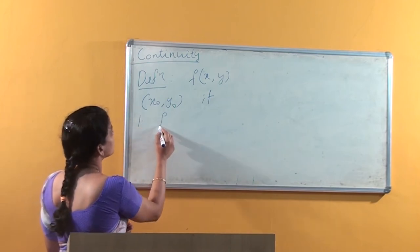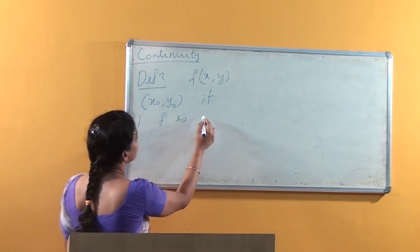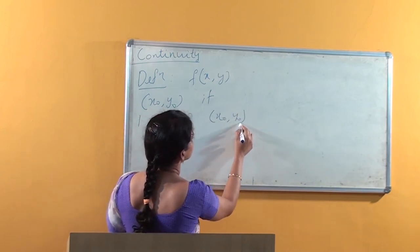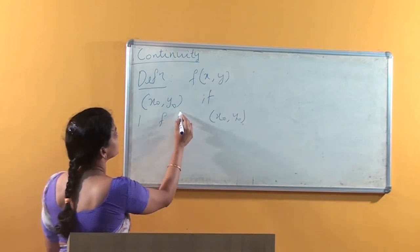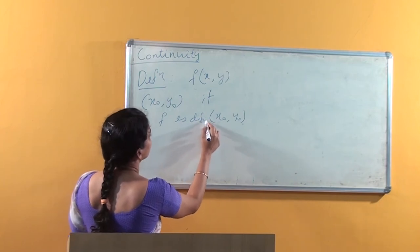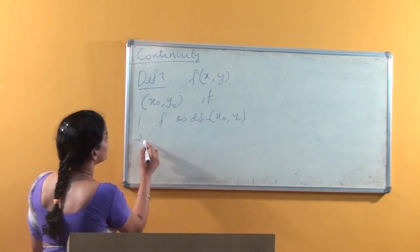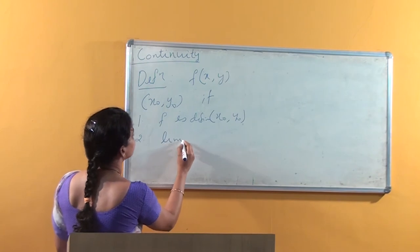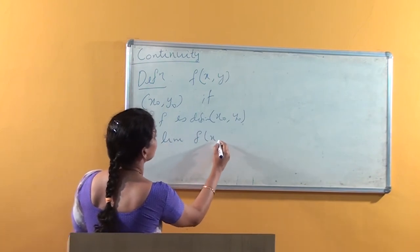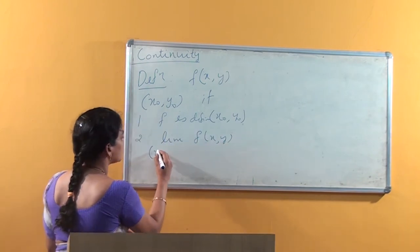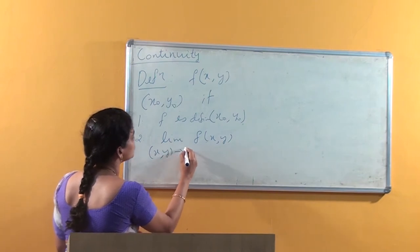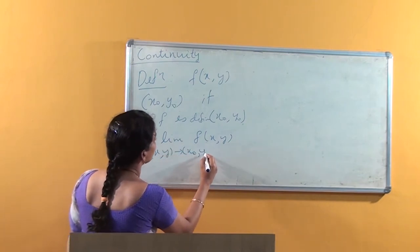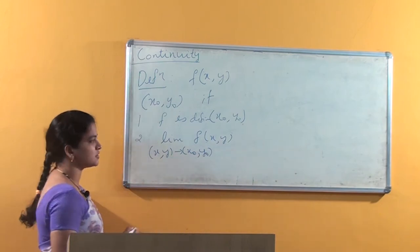The first condition is f should be defined at (x0, y0). Second condition: the limit of this function f(x, y) as (x, y) approaches the point (x0, y0) should exist.